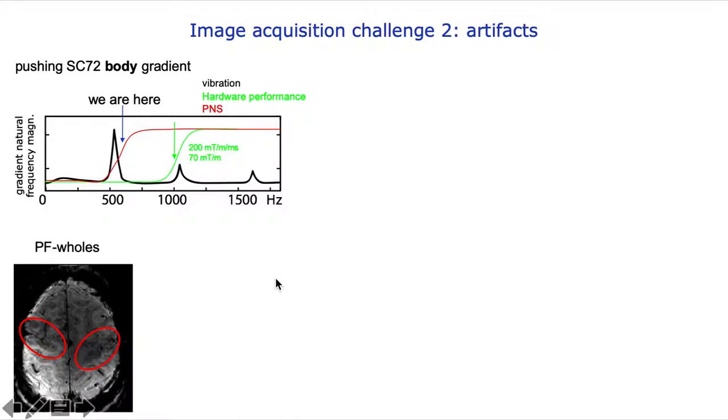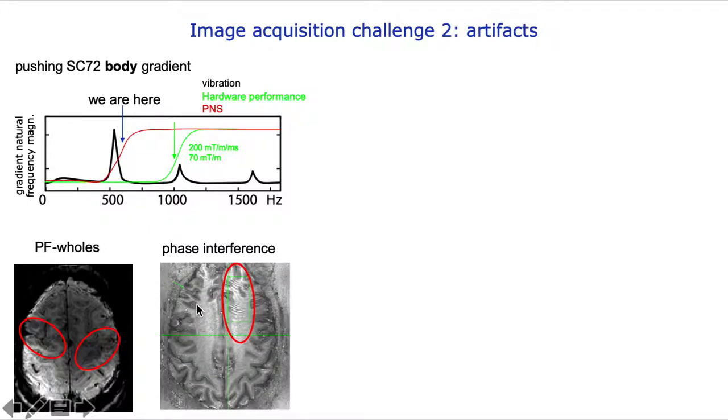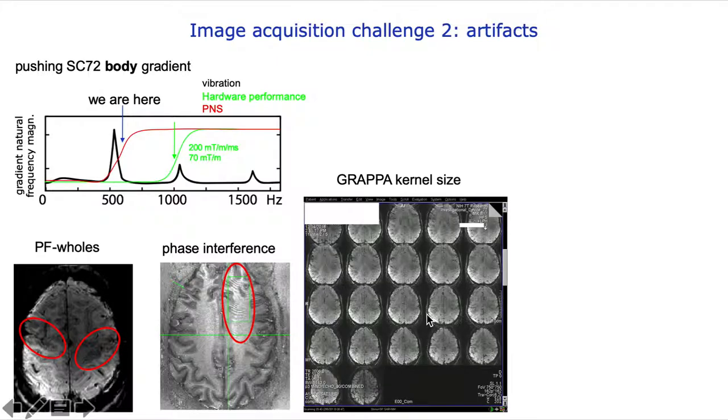This means that with the use of partial Fourier, we're trading off these B0-related holes of the pox reconstruction with higher specificity compared to more smooth images with more stable zero-filling reconstruction methods. We also needed to spend extra time with shimming and phase encoding directions in every participant to deal with phase interference patterns, to remove them or shift them away to areas we don't care about. We also had to spend time for every participant with the Grappa kernel size to minimize them and avoid these infamous Grappa low-resolution artifacts.